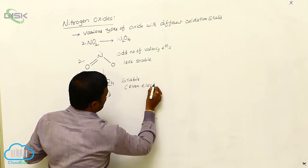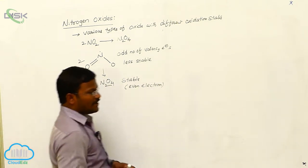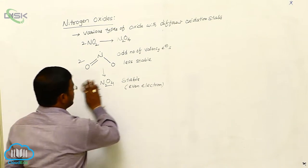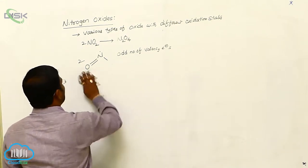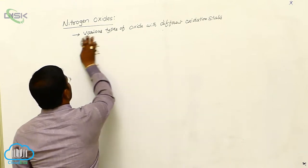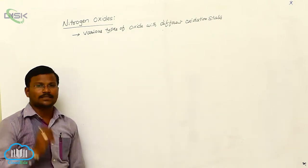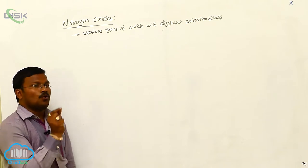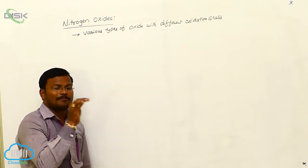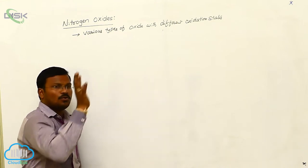Dinitrogen tetroxide is stable because it is an even electron species. The number of valency electrons are even in number, hence it is an even electron species. One important fact: nitrous oxide, N₂O, or dinitrogen monoxide, is called laughing gas.